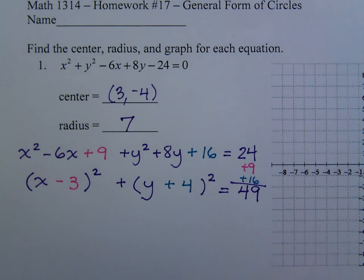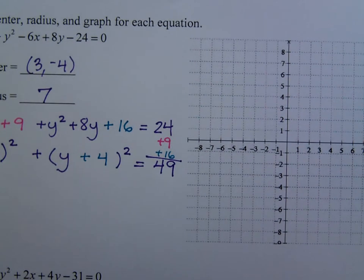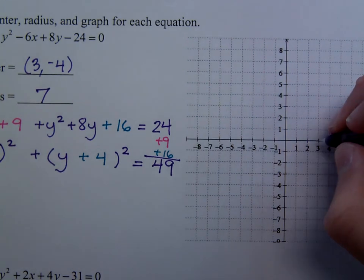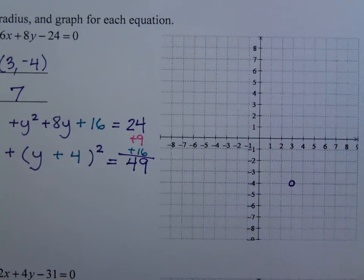So I'll use that information to graph my circle. So let's come over here. I've got 3 negative 4, so 3 negative 4 is the center. And I need to go 7 in all directions, which is going to be kind of a tall order here, but we're going to do our best.